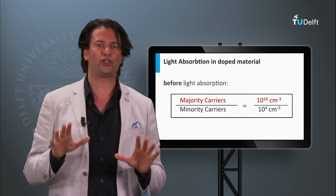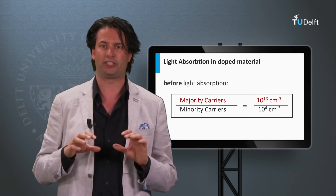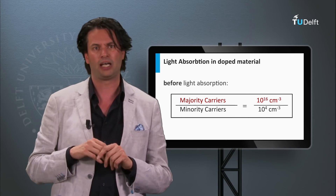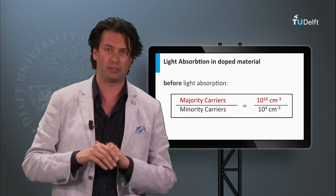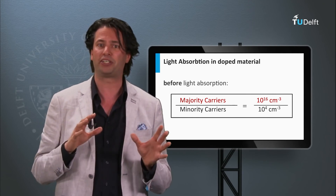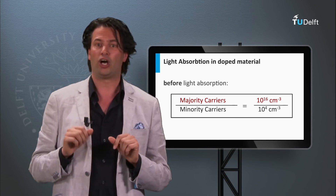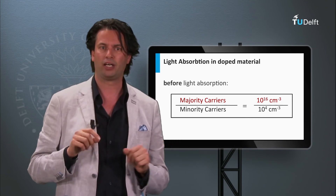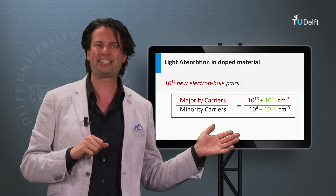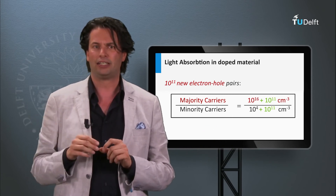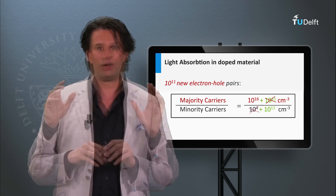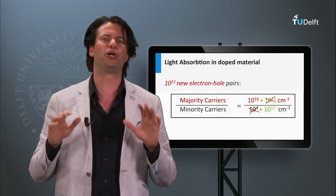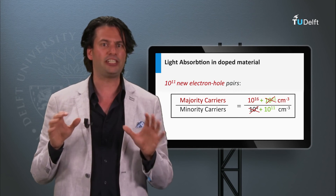Finally, I would like to discuss how light absorption affects the charge carrier density in doped materials. Consider again the situation with a density of majority charge carriers of 10 to the 16th per cubic centimeter and a density of minority charge carriers of 10 to the 4th per cubic centimeter. Now assume we generate 10 to the 11th electron-hole pairs per cubic centimeter by light absorption. The majority charge carrier density is not affected — 10 to the 11th is much smaller than 10 to the 16th. On the other hand, the density of minority charge carriers is drastically affected; 10 to the 11th is much larger than 10 to the 4th, and its density is increased by 7 orders of magnitude.